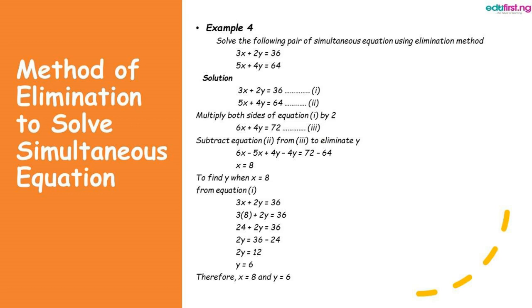We subtract equation 2 from equation 3 to eliminate y. We have 6x minus 5x plus 4y minus 4y equal to 72 minus 64. This gives x equal to 8. Now that we have a value for x, we can input this value into equation 1 to get the value of y.